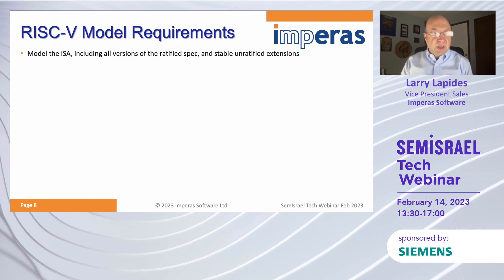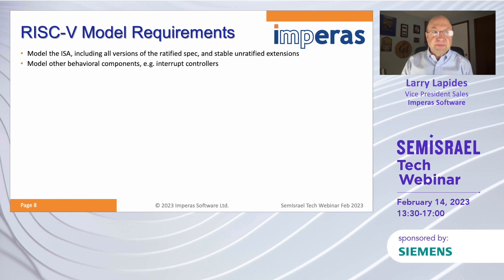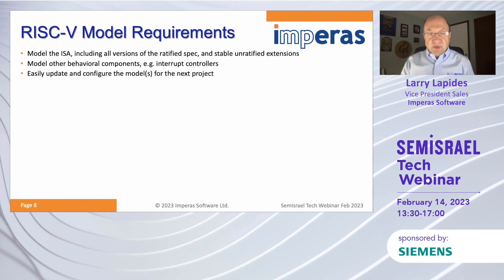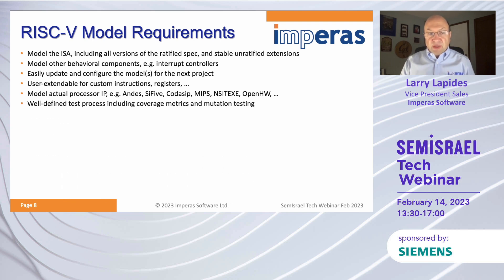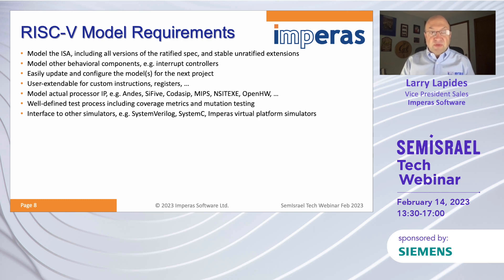Vector crypto is now stable — we have one customer doing an implementation of that, and we've added it to our model. You need to be able to model other behavioral components, for example interrupt controllers, and easily integrate and configure the models for the next project. It needs to be user-extendable for custom registers, able to model actual processor IP, with a well-defined test process including coverage metrics and mutation testing. There needs to be an interface to other simulators — whether SystemVerilog on the DV side, SystemC, or Empiris virtual platform simulators.